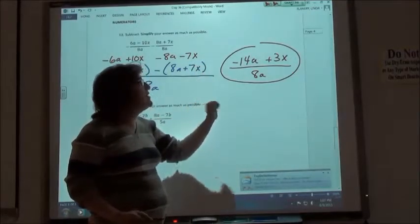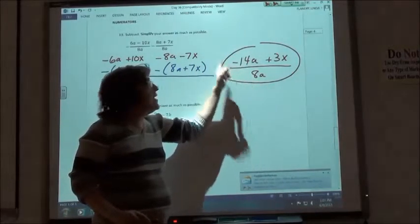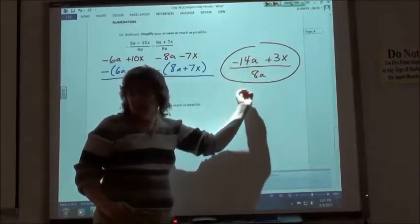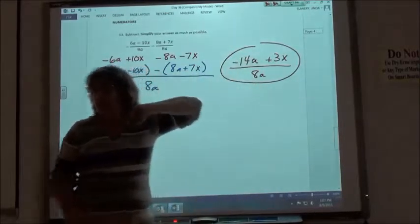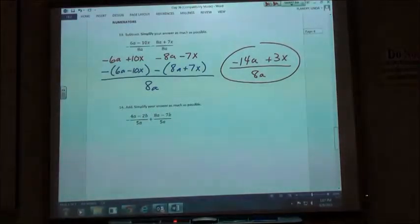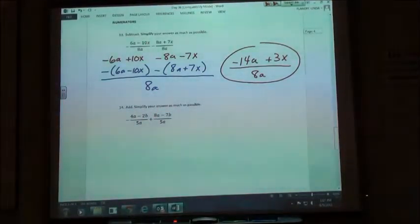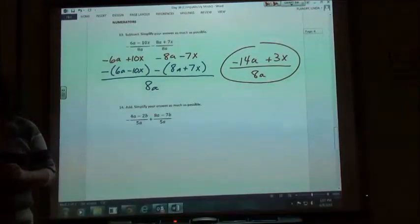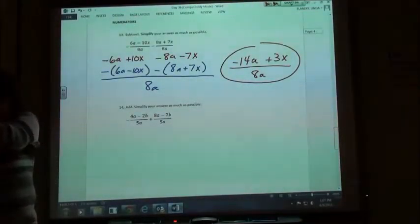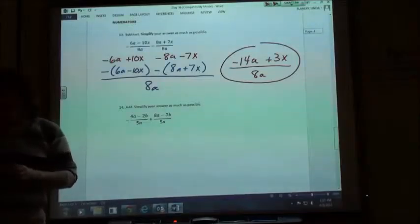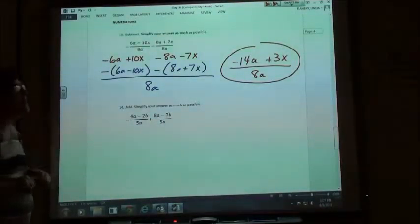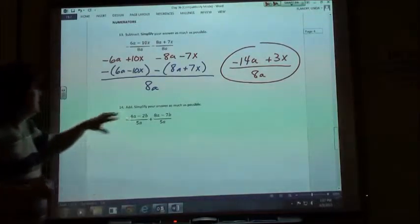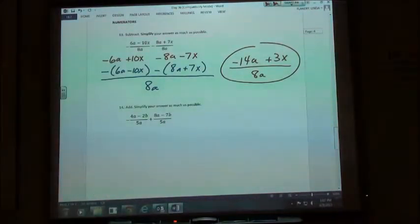So when you type it in, I suggest you hit the fraction thing first, then type the top in separately so that the negative doesn't end in front. It ends up on the top with the 14 because that's where it's supposed to be. Because normally if you type negative 14a and you hit fraction, the negative stays in front, but we need it on the top. So hit the fraction button first and then type in the top and the bottom. So number 14, same thing.